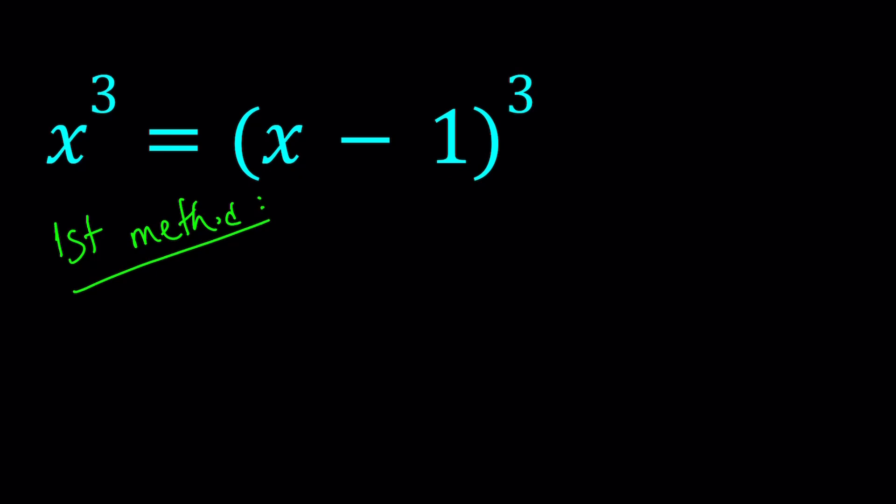So for my first method, I'm going to be using difference of two cubes. Let's remember the formula. a³ minus b³ can be written as (a - b) multiplied by (a² + ab + b²).